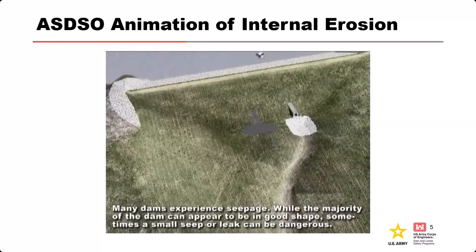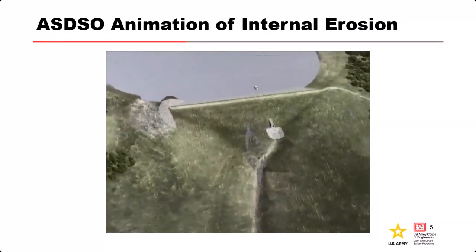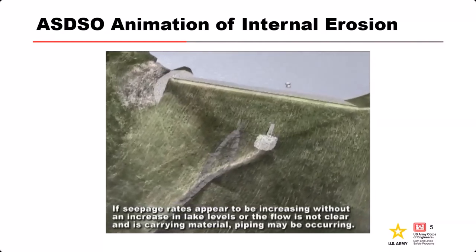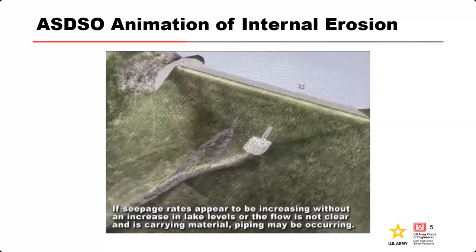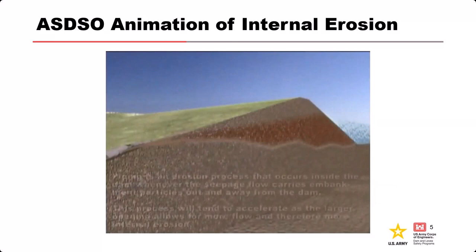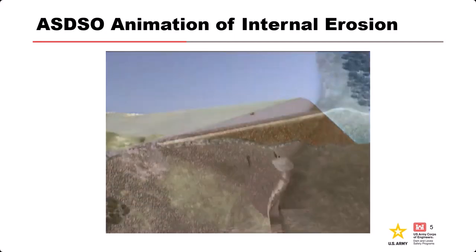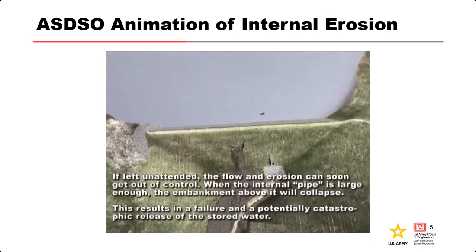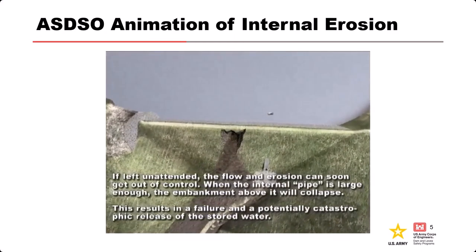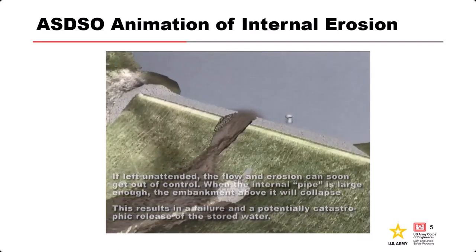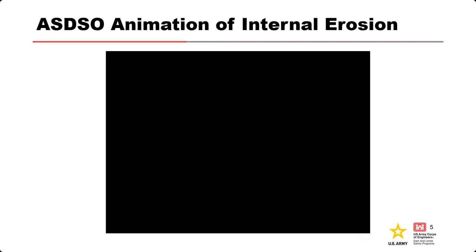All dams and levees have some seepage as the impounded water seeks the path of least resistance through the embankment and foundation, and should be controlled to prevent erosion. Internal erosion may be occurring if the seepage rate is increasing without an increase in impounded water stage, or if the flow is carrying soil particles — muddy water, which would be bad. What you're looking at here is an example of concentrated leak erosion where a flaw is present, particles are being moved, and we see muddy water coming out. A pipe forms, the overlying embankment collapses, we overtop, and a breach opens in the entire embankment — internal erosion failure from start to finish.